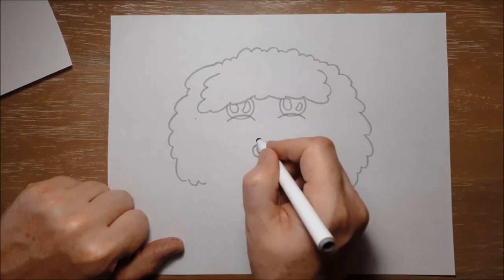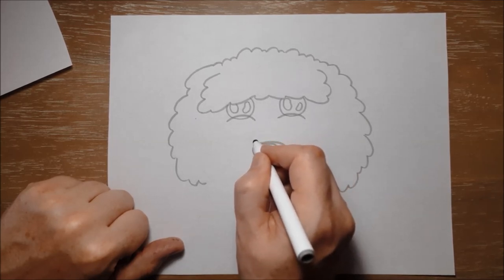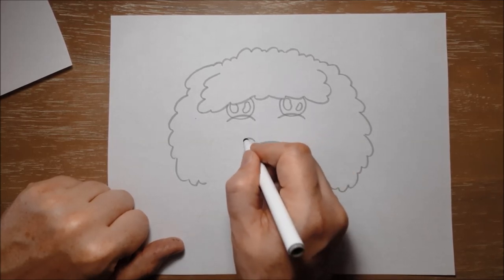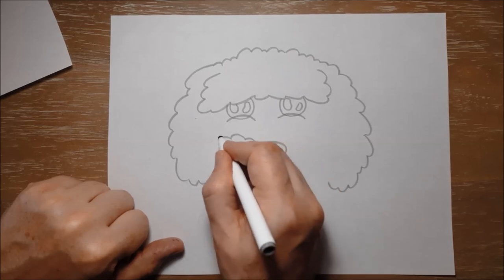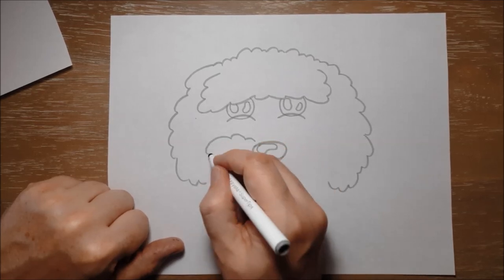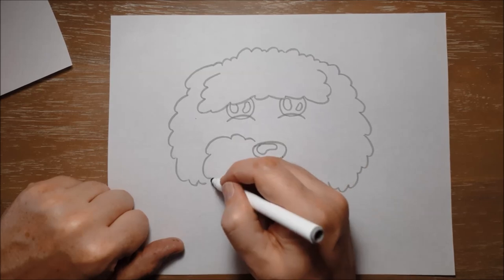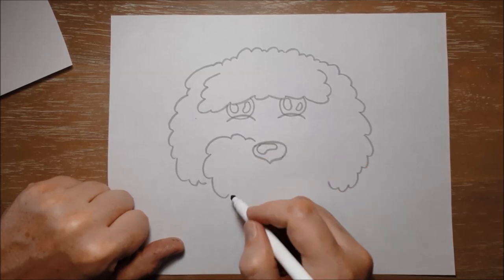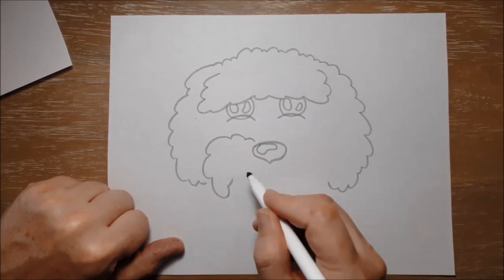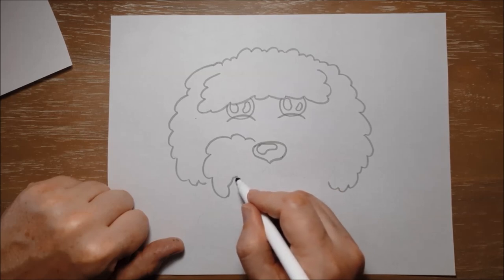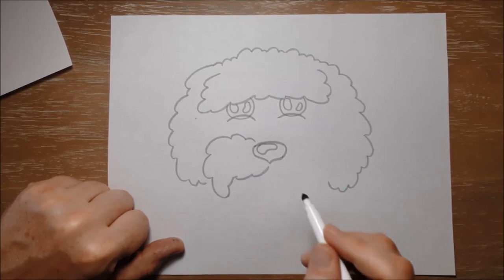Now the fur around her mouth is going to again look like a kind of a big fluffy mustache. Lola is a girl dog but she is a dog so she has fur. So it looks a little bit like a big Super Mario brother mustache or something just like this.